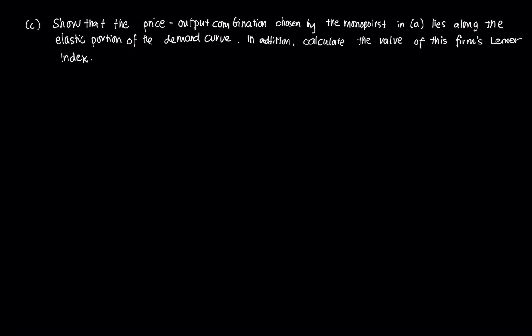Show that the price output combination chosen by the monopolist in part A, so that's the price of 300 and the quantity of 5, lies along the elastic portion of the demand curve. We're also asked to calculate the value of the firm's Lerner index, which is a measure of monopoly power.